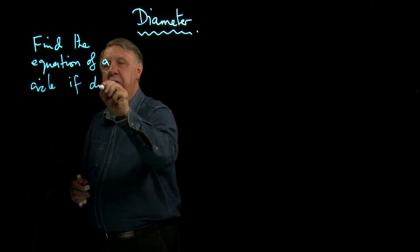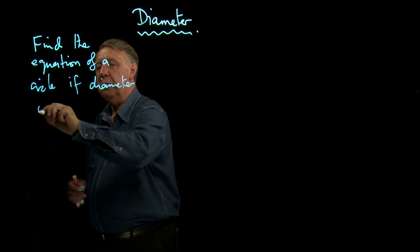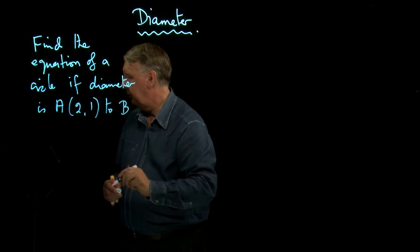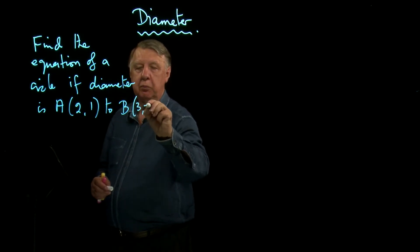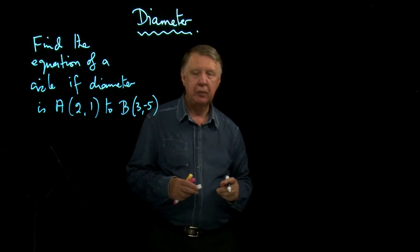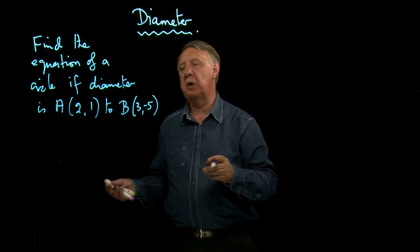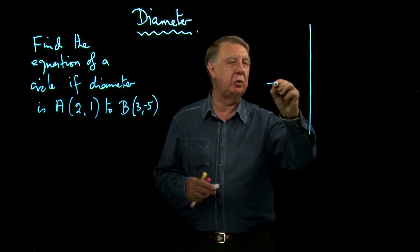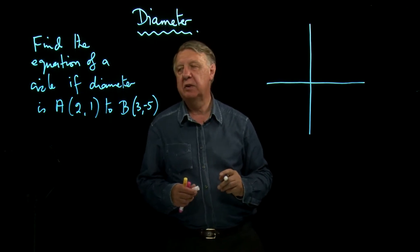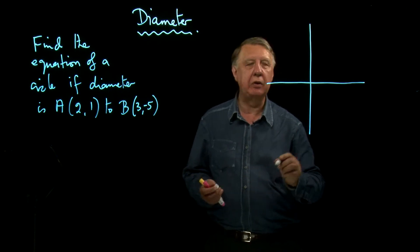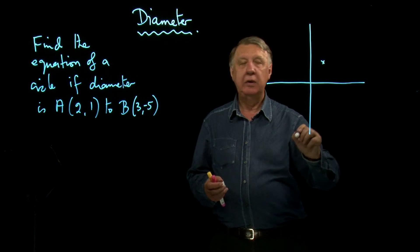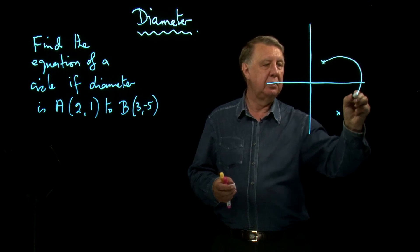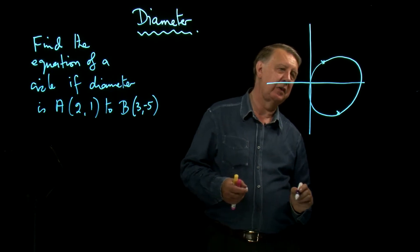So supposing the diameter is from the point A to the point B, how would we find the equation of the circle? Now it may be that there's a little bit more to the question and so a diagram is possibly helpful. So let's draw one anyway. Always try and make it roughly right. I mean you can't get it exact because you haven't got time. So two one's about here and three minus five is about down here. So the circle that we're looking at, it's nearly like a circle.